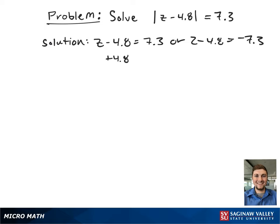Starting with the left-hand side of the equation, we're going to add 4.8 to both sides. That gives us z is equal to 12.1.